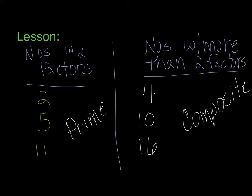Okay? So the ones on the left only have two factors and that includes the number 1. The ones on the right have more than two factors.